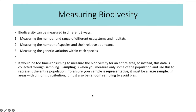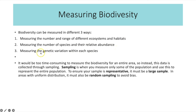There are three ways to measure biodiversity. You can measure the number and range of different ecosystems and habitats — a broader range of habitats attracts a greater range of animals and plants, meaning greater biodiversity. You can measure the number of species and their relative abundance. And you can measure genetic variation. So essentially it's measuring habitats, number of species, or genetic variation.